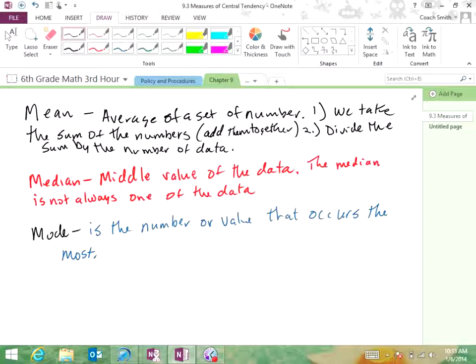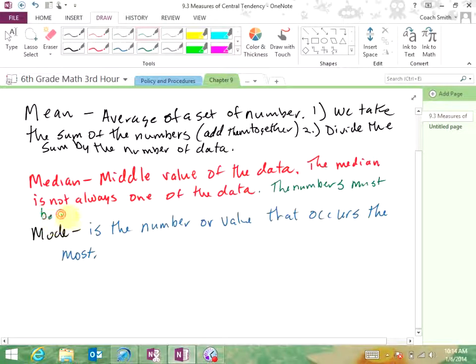Now, let's jump back up here to median right quick. I left one thing out. When you're figuring the median, and I was going to say this down when we actually figured it, but I'm going to go ahead and put it up here too. The numbers, not number, the numbers must be in order. But before we can find the median of a set of data, that data has to be in order.